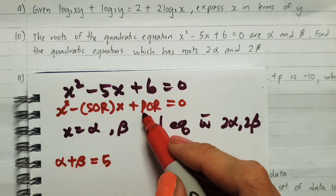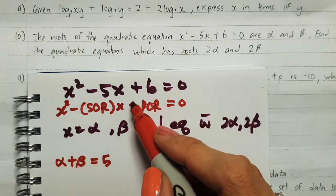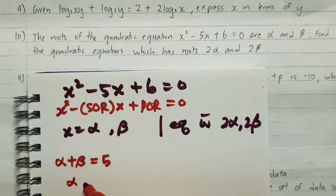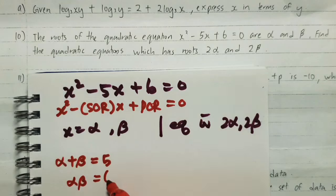On the other hand, product of roots must be 6. You see, positive and positive. Product of roots is αβ = 6.